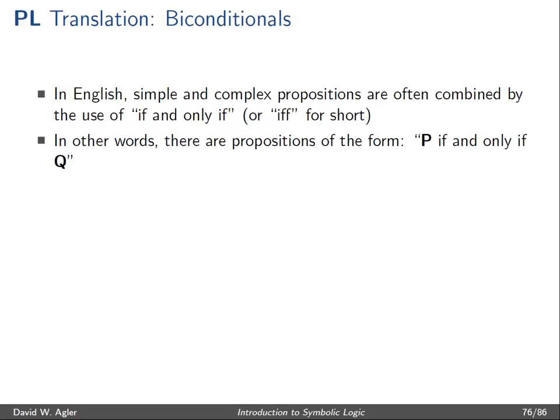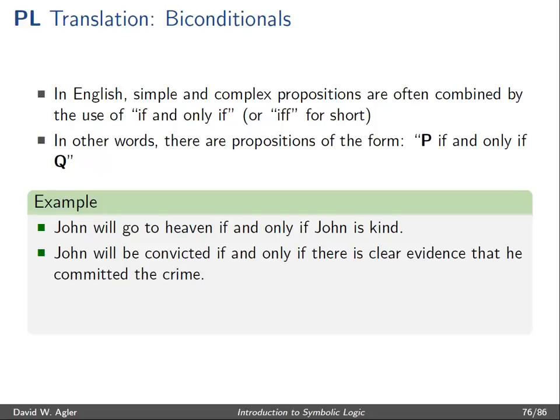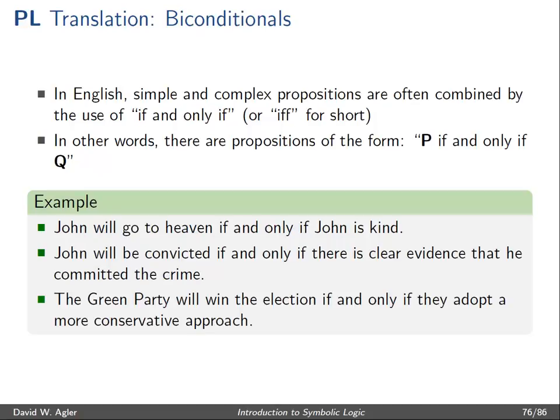That is, there are propositions that we utter and use to argue that have the following structure or form: P if and only if Q, where P and Q are placeholders for other simple or complex expressions. For example: 'John will go to heaven if and only if John is kind,' 'John will be convicted if and only if there is clear evidence that he committed the crime,' and 'the Green Party will win the election if and only if they adopt a more conservative approach.' Notice that in each of these examples there is a complex expression formed of two simpler expressions, created by the use of 'if and only if.'